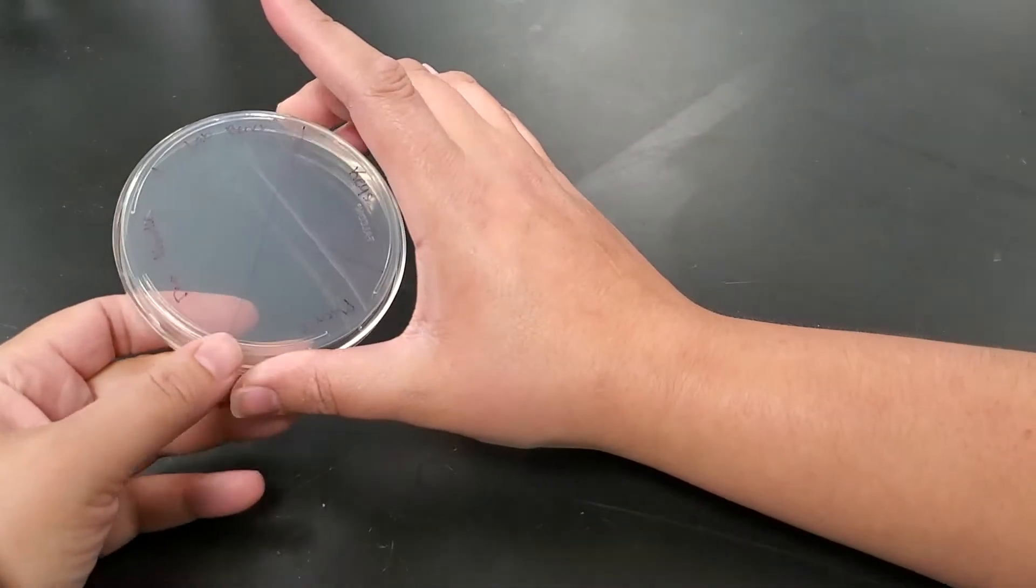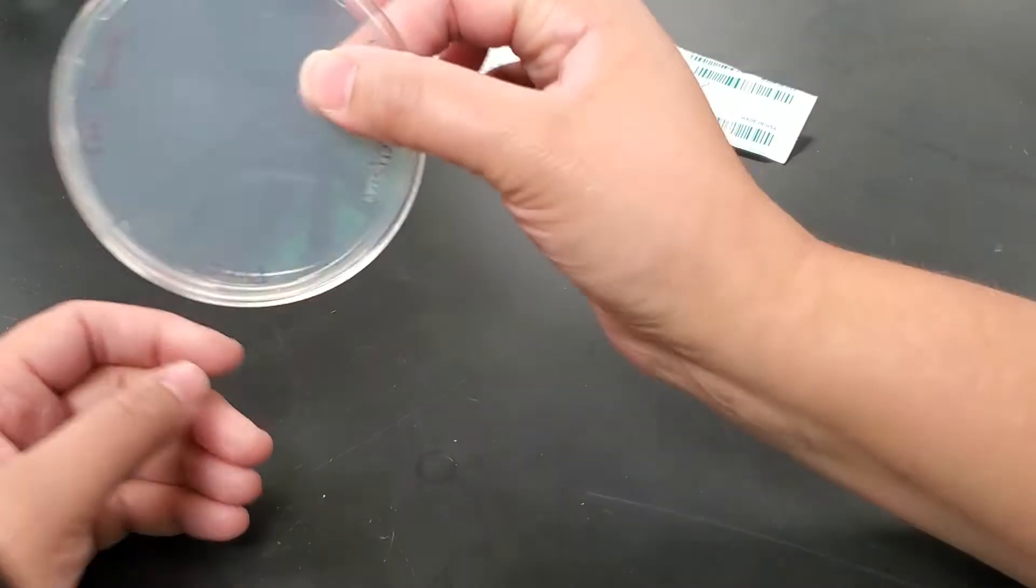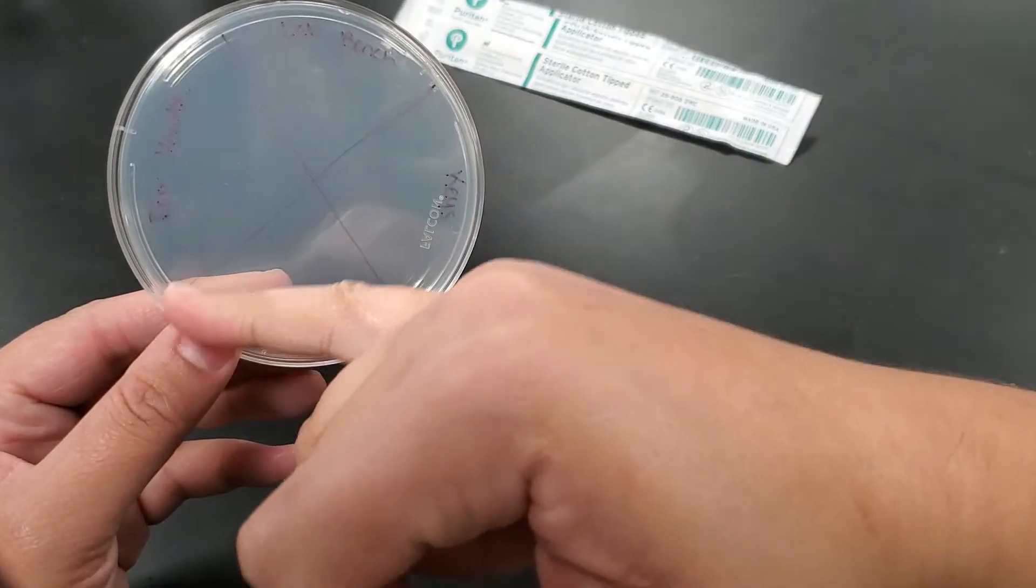Today we're going to be setting up the Bacterial Growth on Fomites lab. I need one of our agar plates, which I've got split into four quadrants.